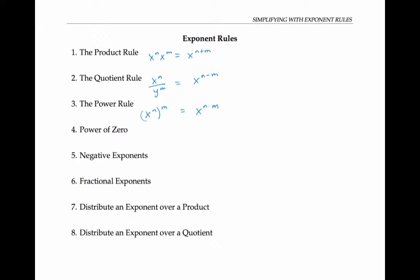The zero power rule says that anything to the zero power is one, as long as the base is not zero, since zero to the zero is undefined. For negative exponents, to evaluate x to the minus n, we take the reciprocal 1 over x to the n. To evaluate a fractional exponent like x to the 1 over n, we take the nth root of x.